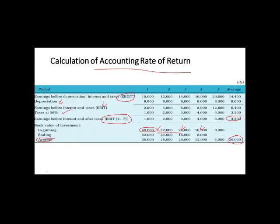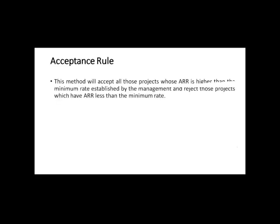Suppose accounting rate of return here comes to be around 4 or 5%. If this accounting rate of return is greater than the amount that your management has invested or if ARR is higher than the minimum rate established by management, then you will accept, else you will reject the project.